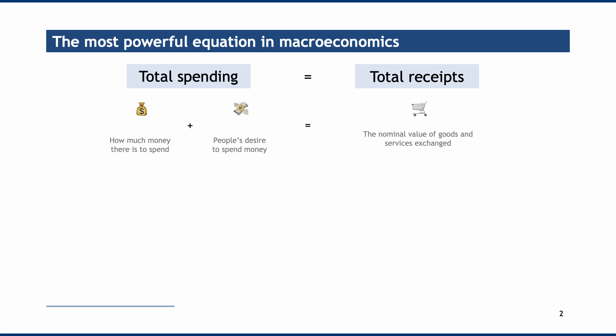In economics, nominal values are in cash terms — what we're used to paying in a transaction. We can separate the cash value into two elements: the impact of the change in price, which is inflation, and the real underlying value. So our shopping trolley receipt splits into inflation — changes in the price level, represented by a price tag — and the underlying real value of goods and services, represented by an oil drum, a key commodity in the global economy.